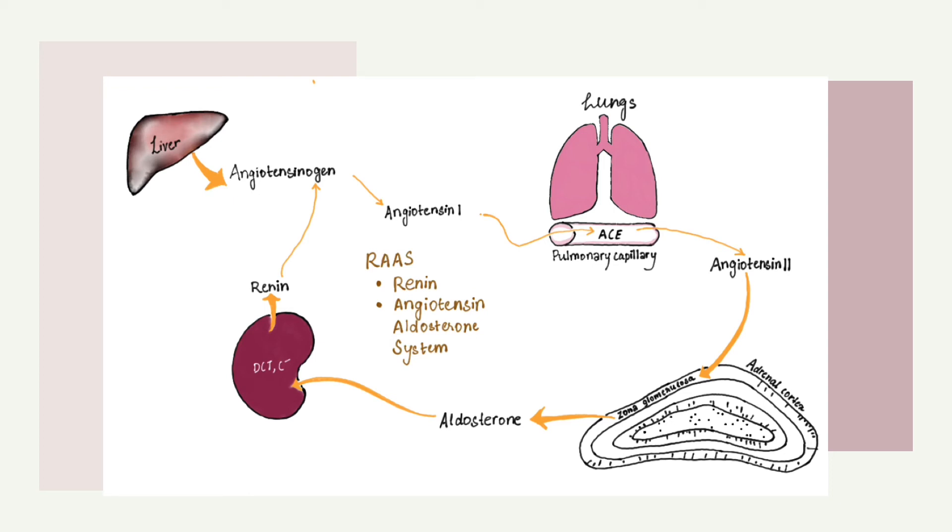Angiotensin 2 affects a lot of tissues. Here, it stimulates the zona glomerulosa to produce aldosterone. This loop is known as renin-angiotensin-aldosterone system.